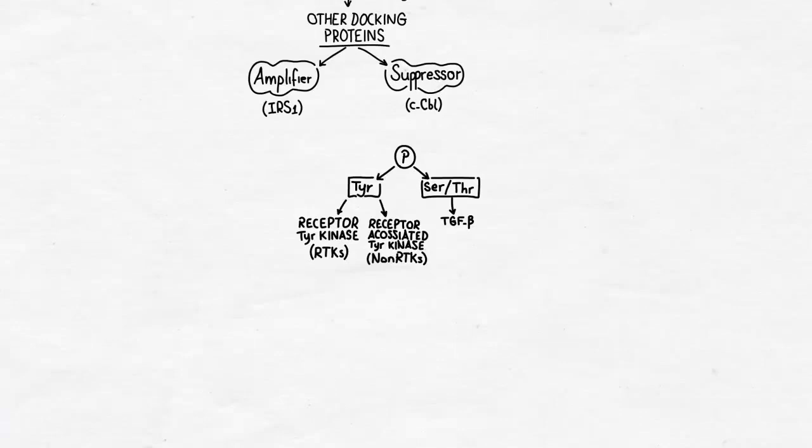Tyrosine phosphorylation is carried on either by the receptor itself, where the receptor contains a tyrosine kinase domain, and these receptors are called RTKs, or receptor tyrosine kinases.